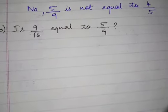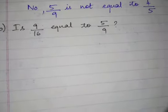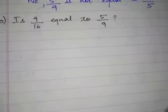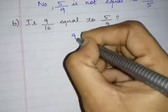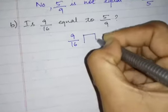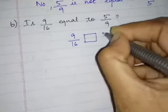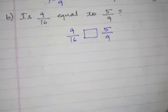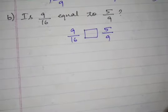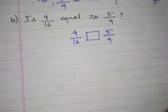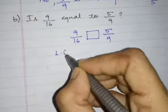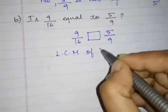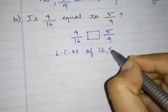Next is your B problem: is 9 by 16 equal to 5 by 9? The same approach — I am going to compare 9 by 16 and 5 by 9. Whether our denominators are the same? No. So we will make it the same. We take LCM of 16 and 9.